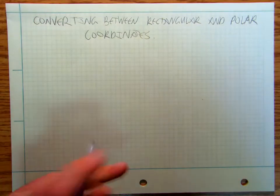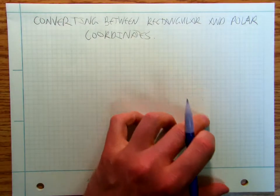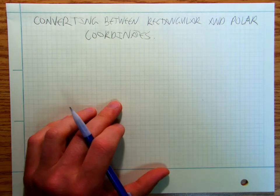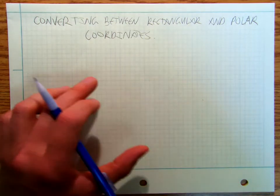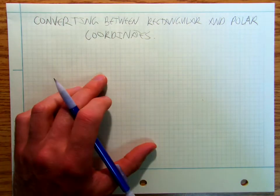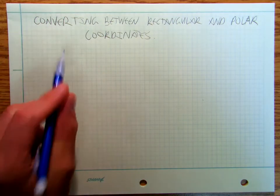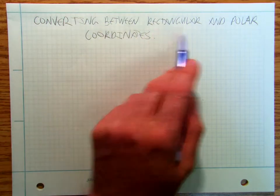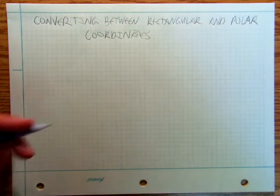This video I'm sort of dumping into Chapter 8, but it's just a good one to know and I have a feeling that some people are going to find this video and find it useful in a lot of different contexts. In this one I'm going to go through converting between rectangular and polar coordinates.